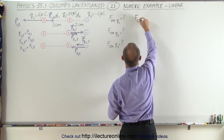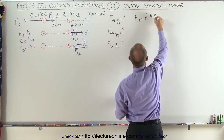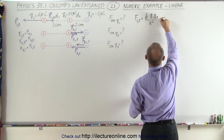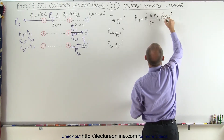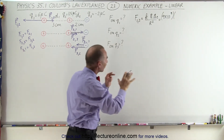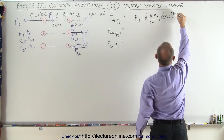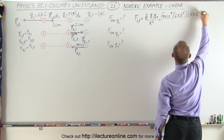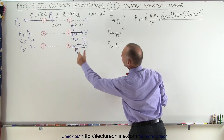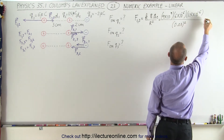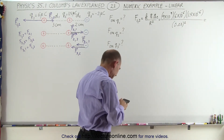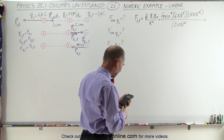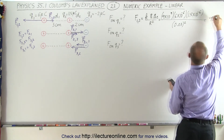So let's find the magnitude of those three forces. First, we're going to find the force between 1 and 2, which is equal to K times Q1 times Q2 divided by the distance between them squared. Negative signs don't matter here because we're only finding the magnitude. So this will be 9 times 10 to the 9th, times 6 times 10 to the minus 6 coulombs, times 1.5 microcoulombs, all divided by 0.03 meters squared, and that gives us exactly 90 newtons.